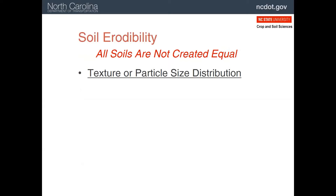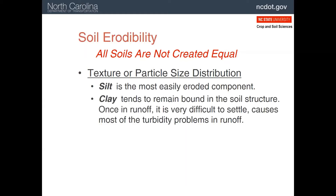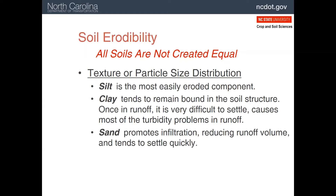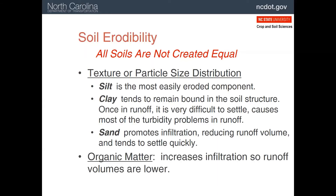Soil properties also affect how fast erosion occurs. We think of soil as having three sizes of particles: sand, silt, and clay, from largest to smallest. Soils with lots of silt tend to erode easily, while those with lots of clay do not, because the clay particles tend to stick to each other and everything else. Sand infiltrates water very quickly, so it is less likely to erode, and if it does, it does not go very far because of the large particle size. Organic matter reduces erosion, but little organic matter exists in the subsoil materials usually being moved around on construction sites.